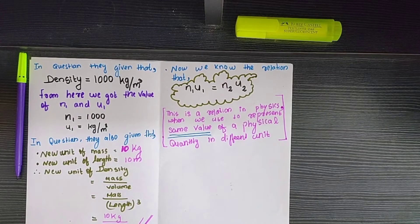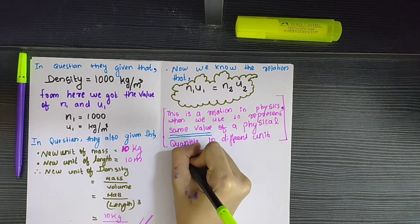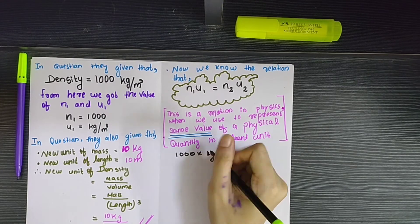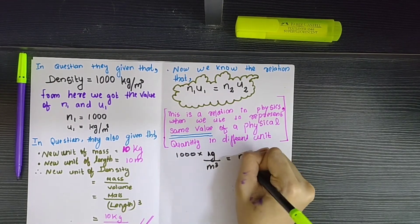So when we substitute the value of n1, u1, and u2, we will get the value of n2. Now let's substitute it: 1000 × kg/m³ is equal to n2 × 10 kg / (10 m)³.